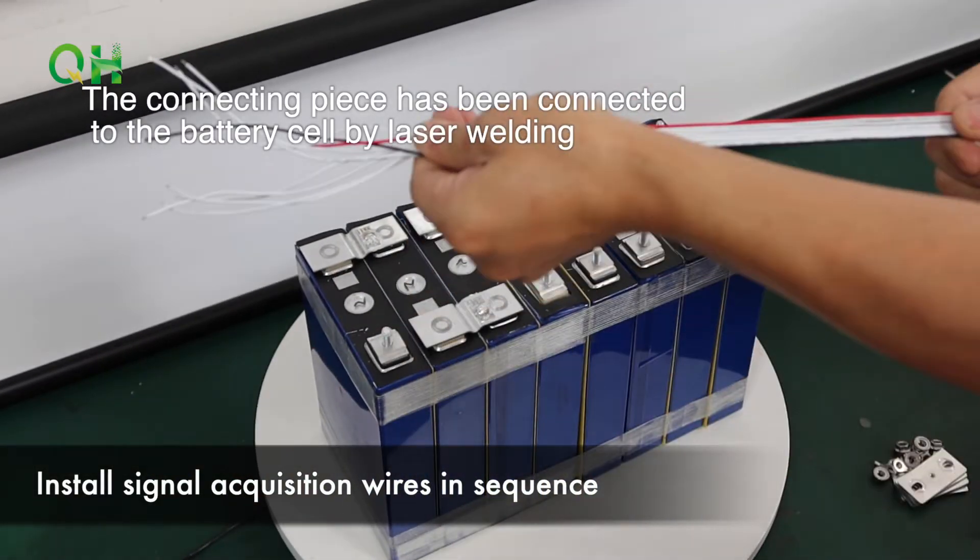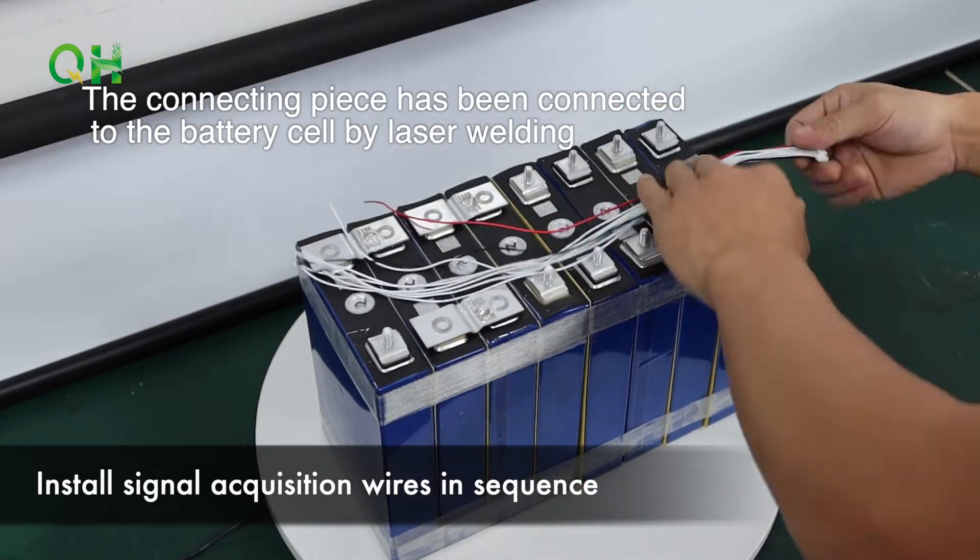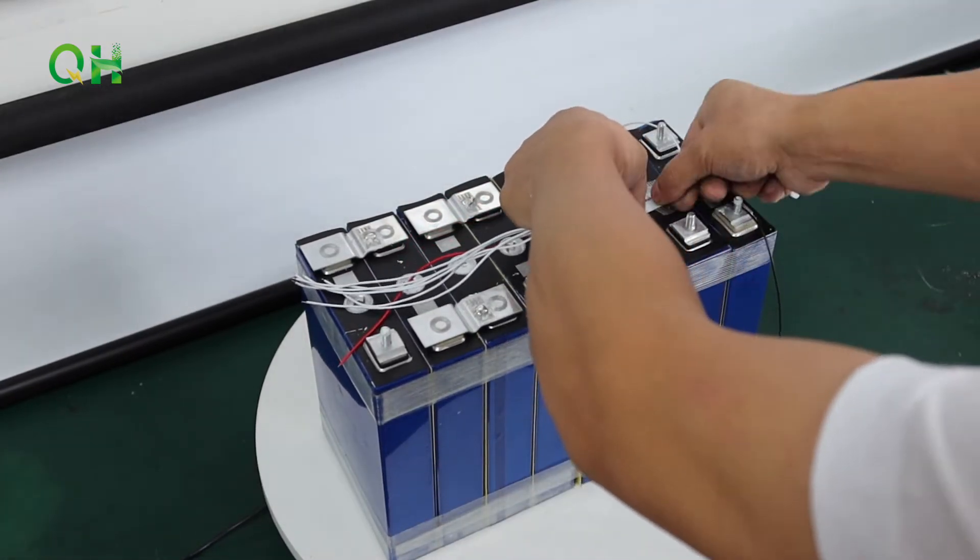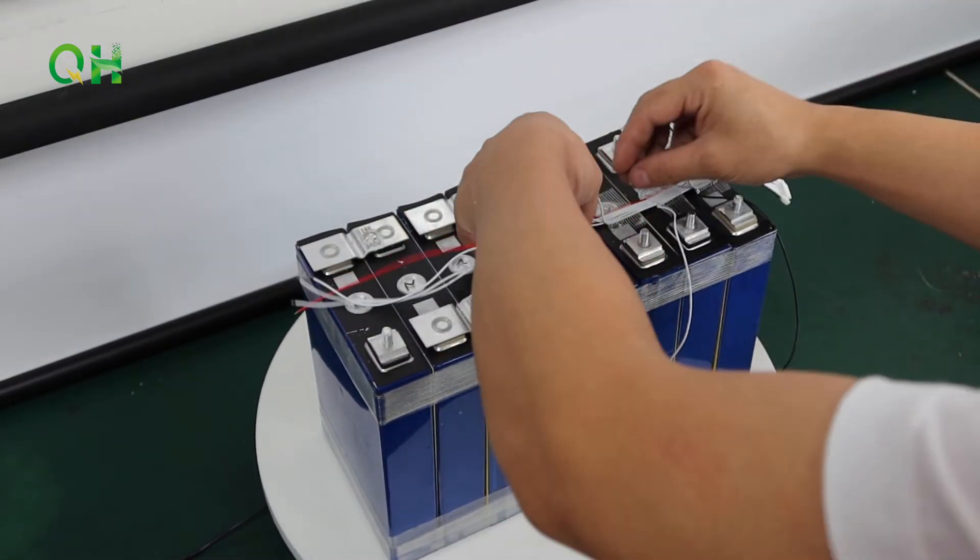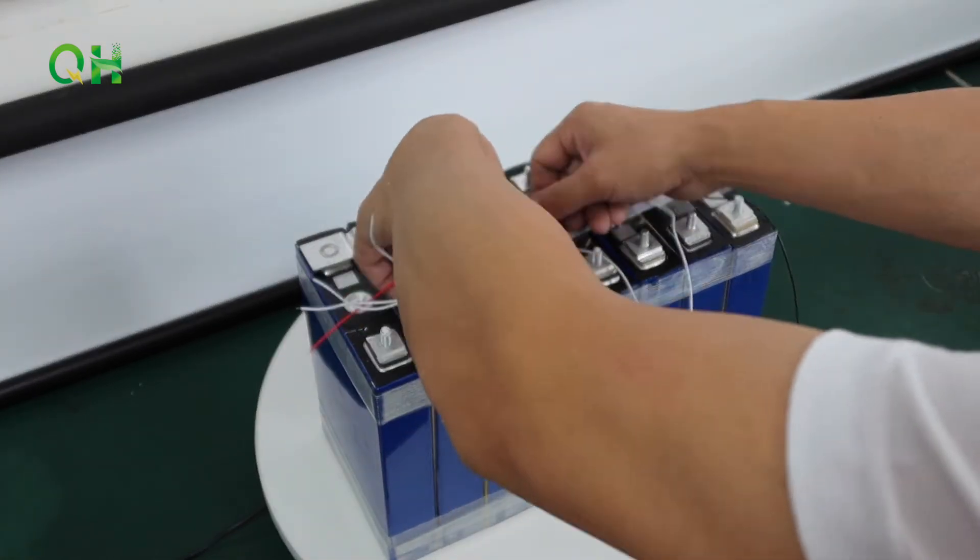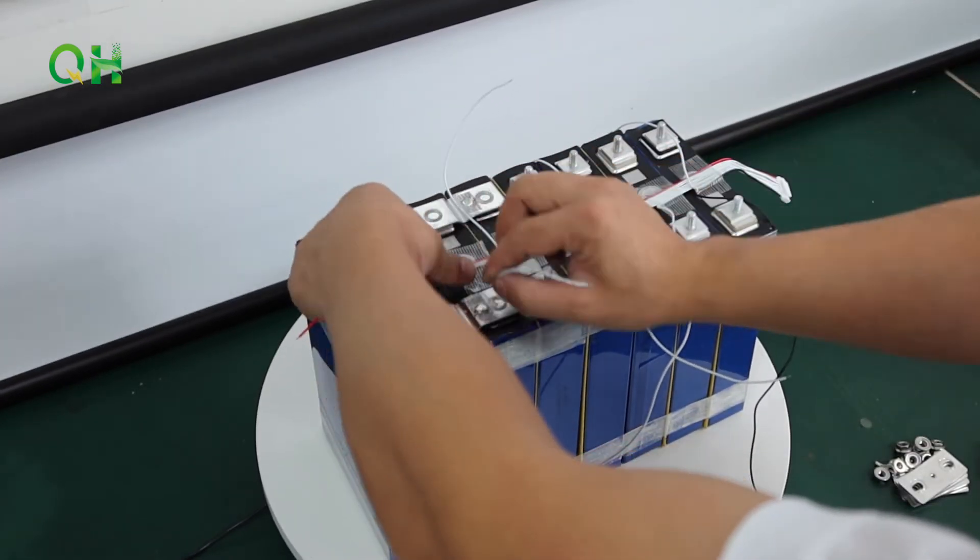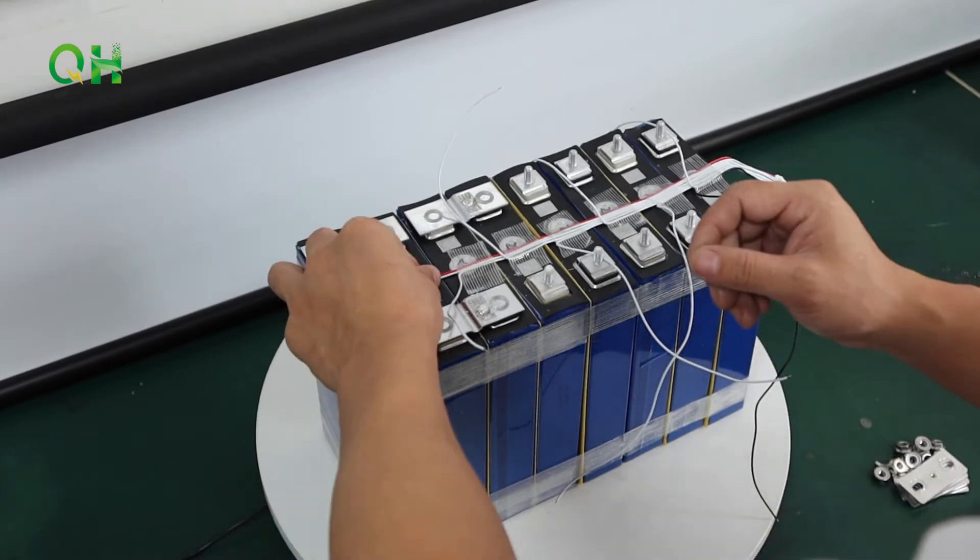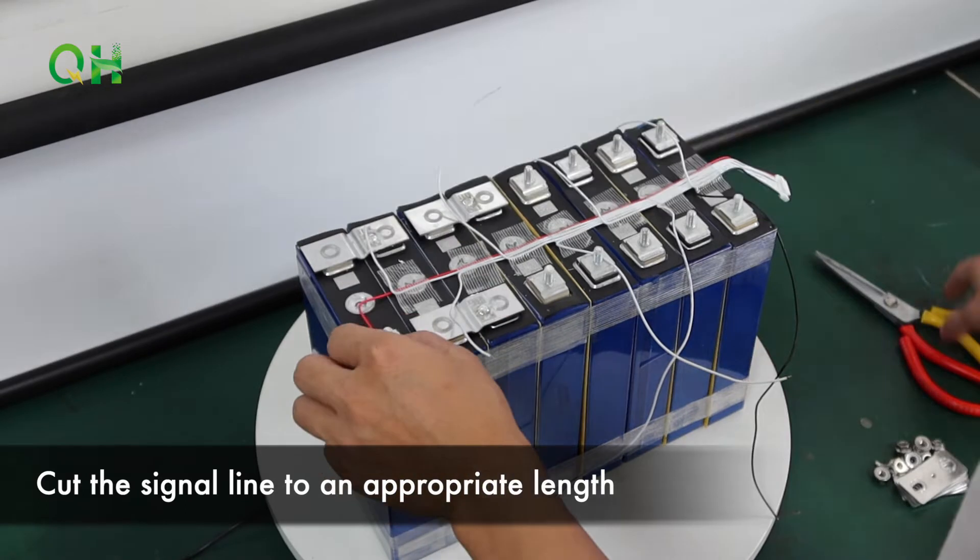Install signal acquisition wires in sequence. Cut the signal wire to an appropriate length.